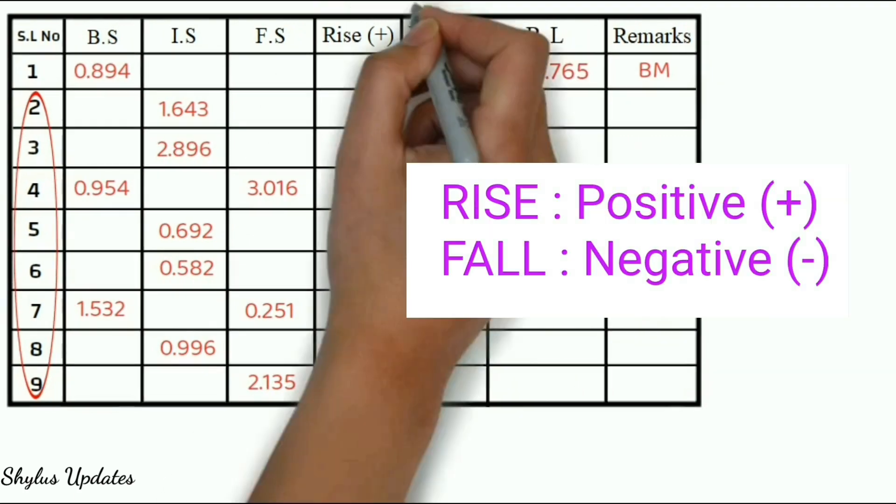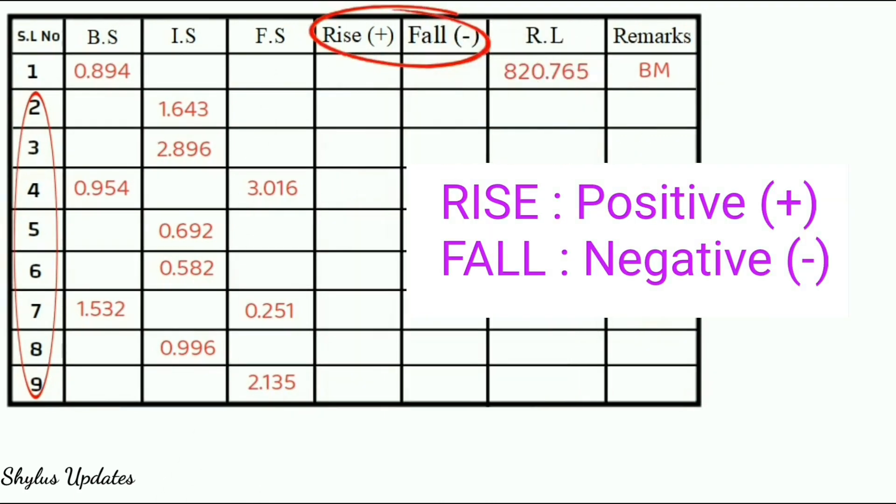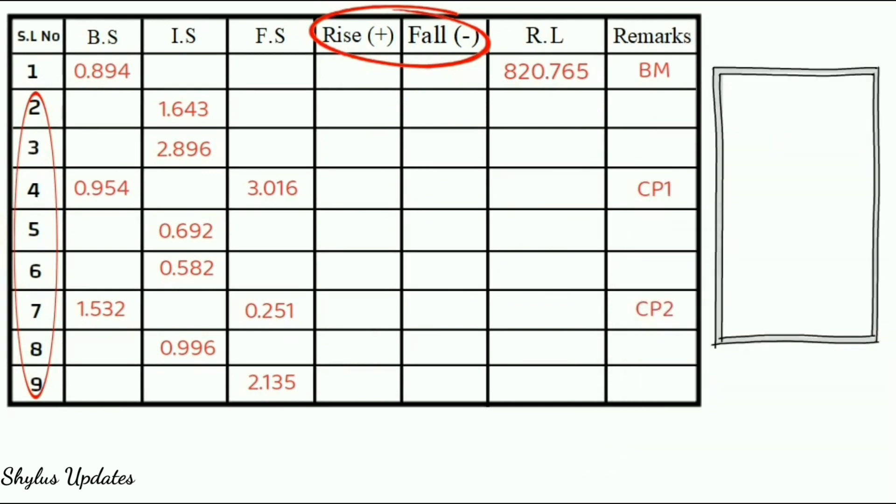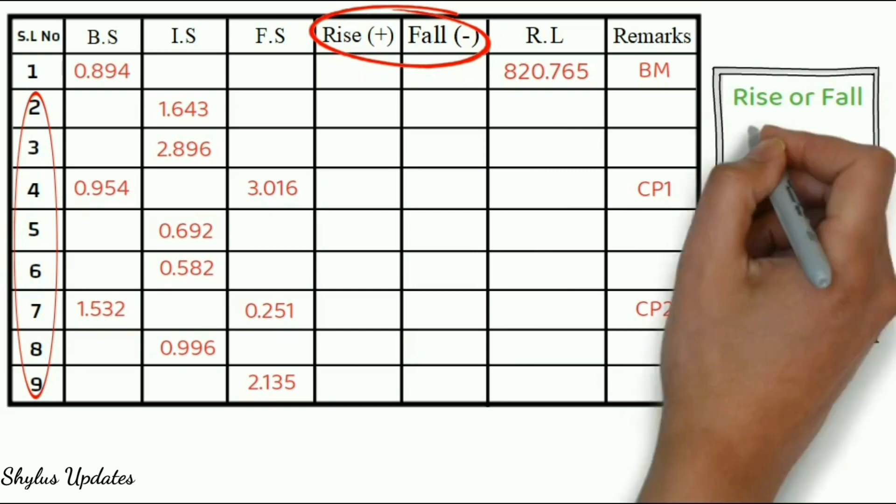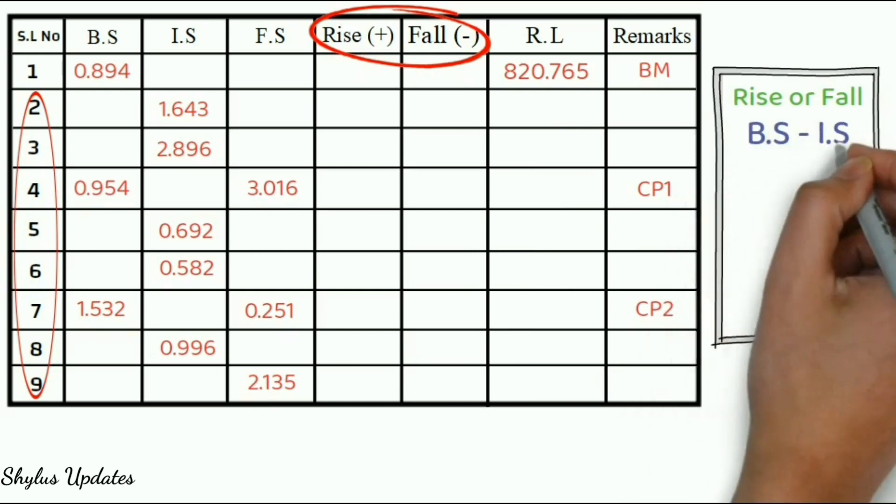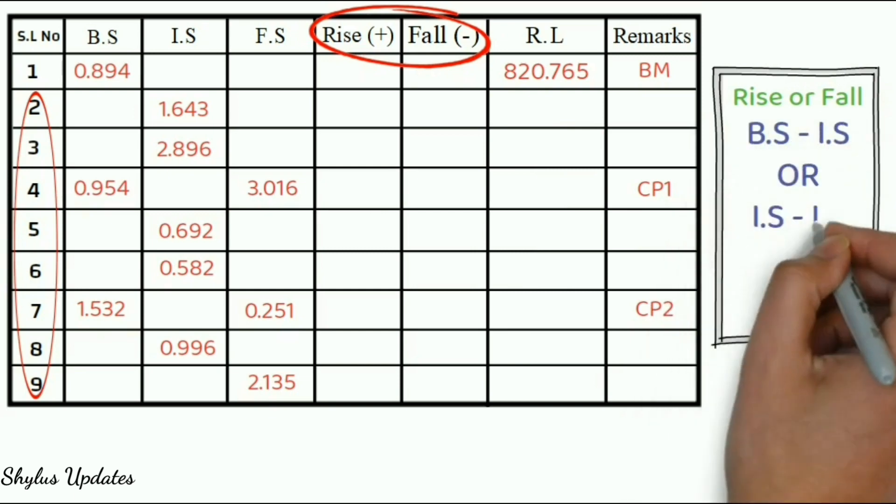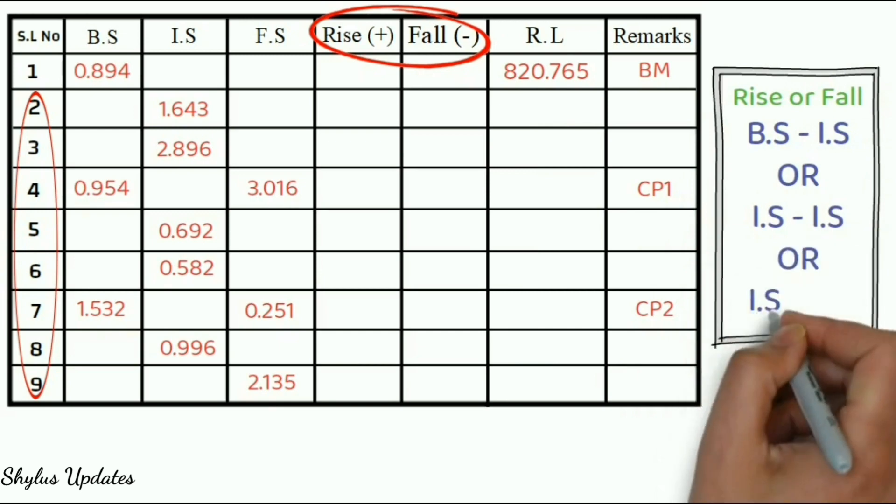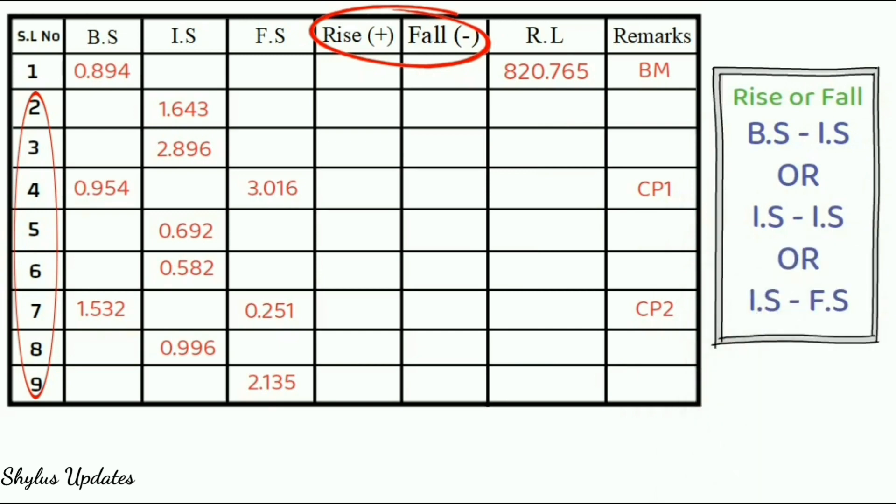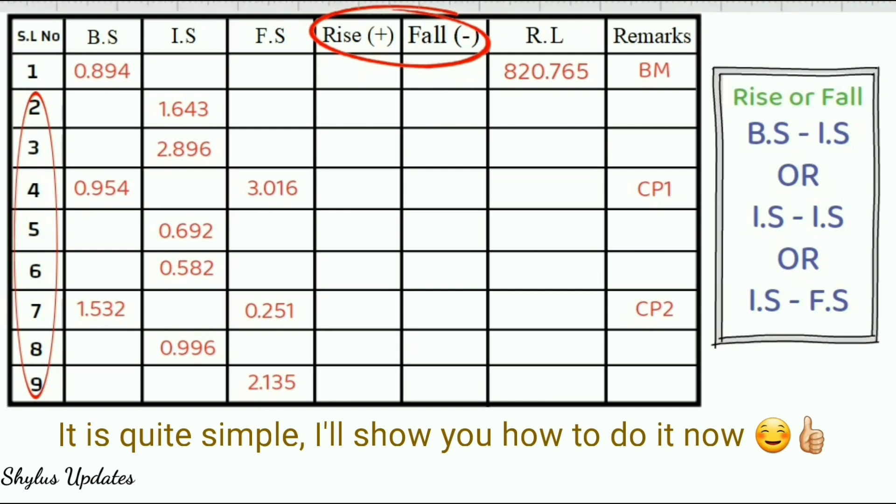Rise means positive and fall means negative. To find rise or fall, use this formula. BS minus IS or IS minus IS or IS minus FS. It is quite simple. I will show you how to do it now.